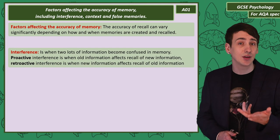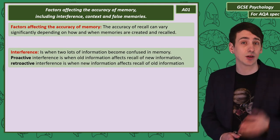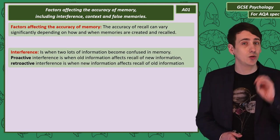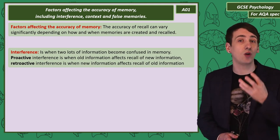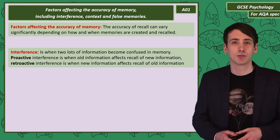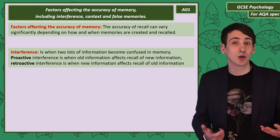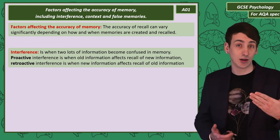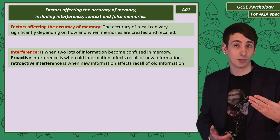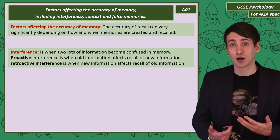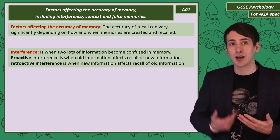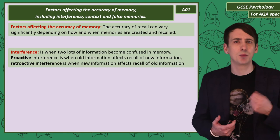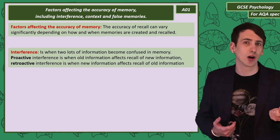The opposite is retroactive interference — this is when new information affects the recall of old information. For example, say you had a bank card with a pin number, and then you get a second bank card. Learning that new pin makes you struggle to remember the pin on your older card.